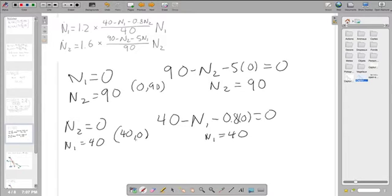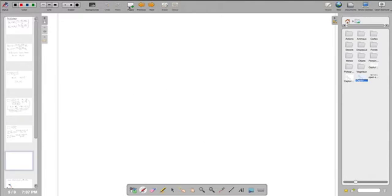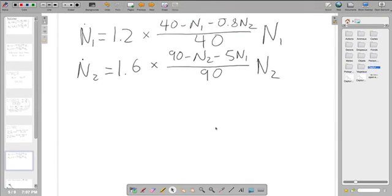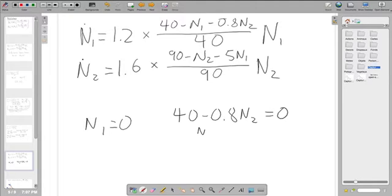So now we've found all our steady states. So the last thing we need to do is find the intersections. So we have three points, but we're going to need two lines. So we need two more points that we can use to graph our null-cline system. So the way we do that is given N1 equals zero, we plug that back into the N1 dot equation. So that gives us 40 minus 0 minus 0.8 N2 is equal to zero, and that gives us an N2 of 50.